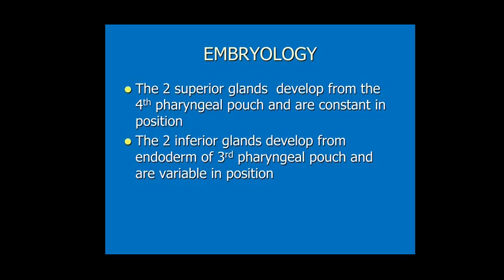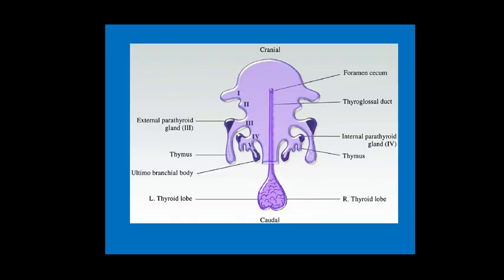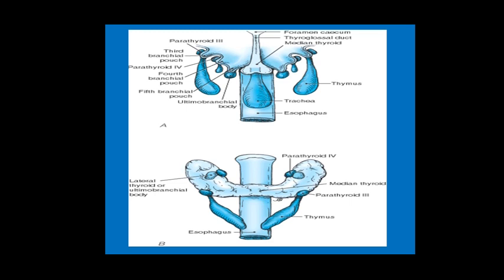Regarding embryology, the two superior parathyroid glands develop from the 4th pharyngeal pouch and are constant in position. The two inferior parathyroid glands develop from the endoderm of the 3rd pharyngeal pouch and are generally variable in position. The 3rd pharyngeal pouch also gives rise to the thymus at its other end. The thyroglossal duct forms both lobes of the thyroid gland.